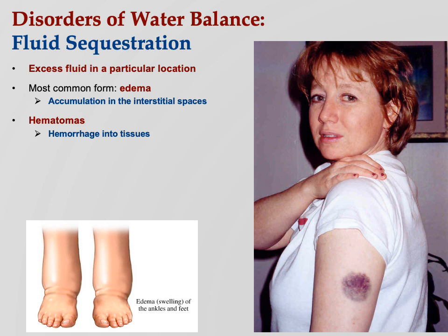Hematomas are where blood accumulates — hemorrhage in the tissues. The woman shown has a hematoma on her arm. I've played baseball and softball for a long time and got hit a lot, so I had big hematomas. When you get them from a softball or baseball, you can see where the stitching lines are — but she doesn't have those, so I think that's from a racquetball. A hematoma is blood that has lost circulation — blood that should be circulating is now in that little blob. It's usually not a big deal, though it can be under certain circumstances.